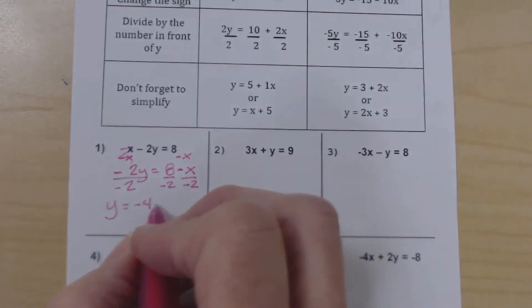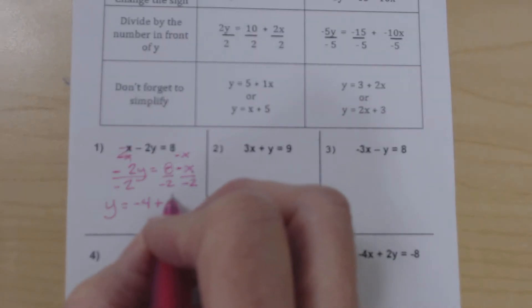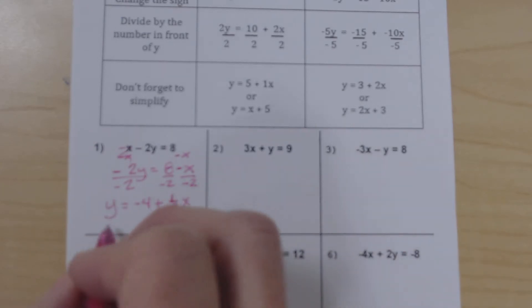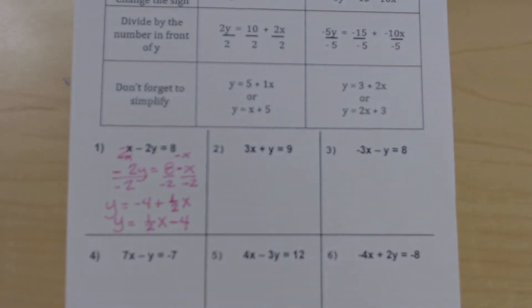8 divided by negative 2 is negative 4. Negative divided by negative is positive. This is, remember, like a 1 in front of there. So we're actually going to write this as a fraction, 1 half x, because this is going to be our slope. And so we want it as a number by itself, not as x over something else. We write it in slope-intercept form and we get 1 half x minus 4.